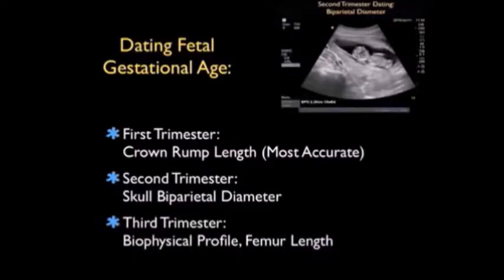In the second trimester, we'll measure the skull biparietal diameter. And in the third trimester, the dating is composed of a biophysical profile focusing on the femur length, as well as other biophysical measurements.